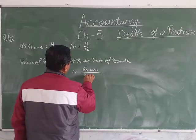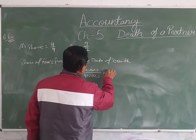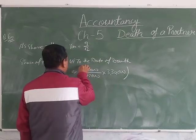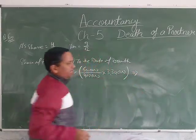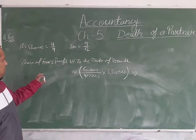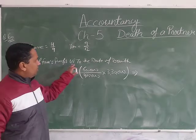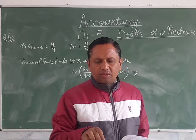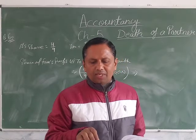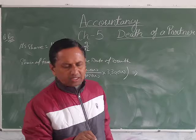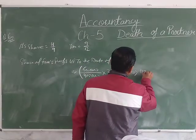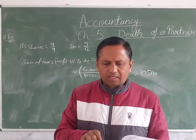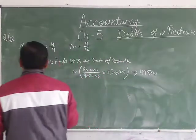The profit up to the date of death is calculated as: 60,000 upon 4 lakh, multiplied by 3 lakh 30,000. This is the easiest way to calculate profit up to the date of death. Since last year's profit ratio is 60,000 upon 4 lakh, applying it to sales of 3 lakh 30,000 gives us a calculated profit of 49,500.